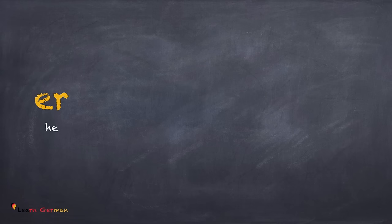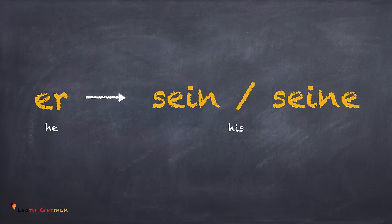The next pronoun is 'er' and the possessive pronouns for 'er' are 'sein' or 'seine.' When the article is 'der' or 'das,' you use 'sein,' and when the article is 'die' in singular or in plural, you would use 'seine.'